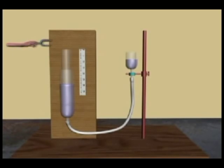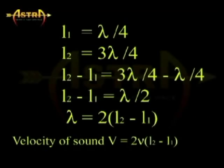At least one node and one antinode between the two ends of air column is being observed. This means the length of air column L2 is equal to 3λ/4.